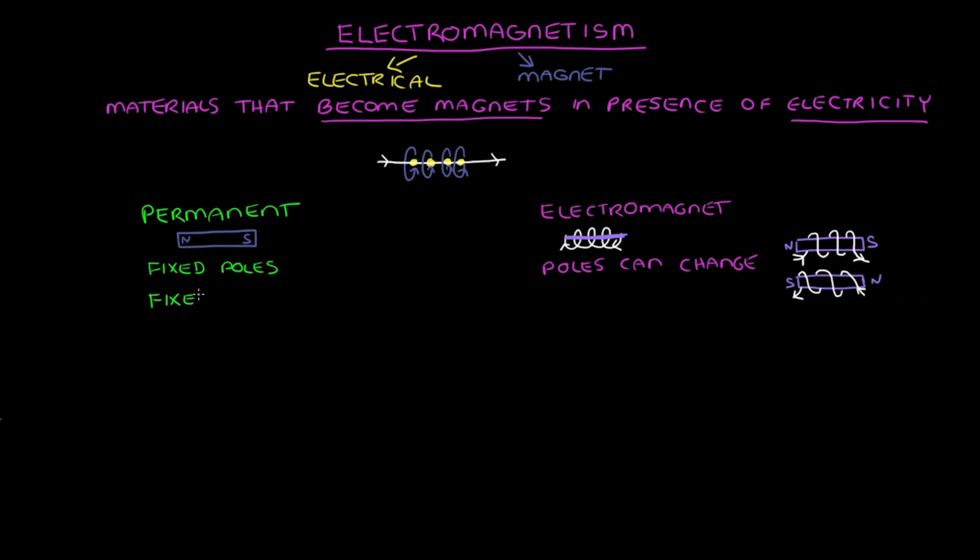Permanent magnets have a fixed strength, but we just talked about how we can change the strength of electromagnets. So electromagnets have adjustable strength. And finally, electromagnets need a power source in order to generate the electricity required to produce magnetic fields. Permanent magnets do not need a power source. But this means that we can also turn electromagnets on and off, which is pretty cool when you think about it. On the other hand, permanent magnets are always on.